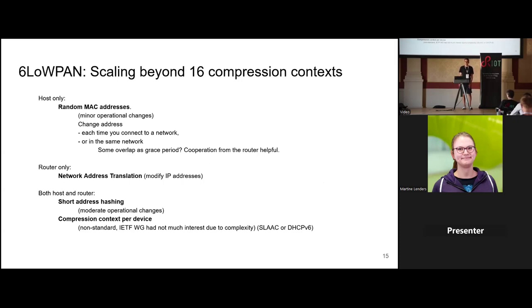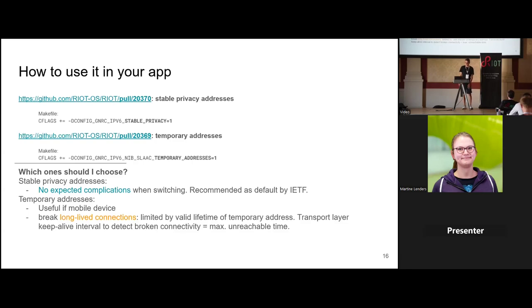There is still the limit of 16 compression contexts in a 6LoWPAN network. If you need to scale beyond that, there are ideas but none are implemented. One idea worth highlighting is a compression context per device instead of shared across the whole 6LoWPAN network — each device having its own set of 16 compression contexts. However, this was dropped by the IETF because the audience perceived it as having too high operational complexity.